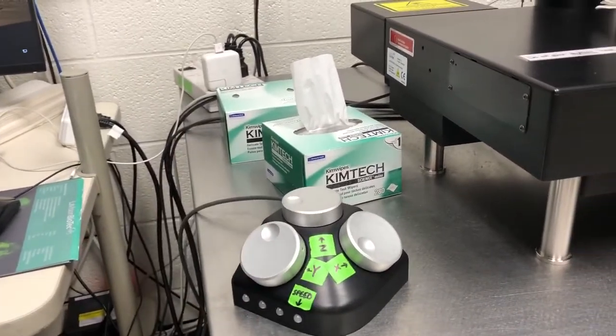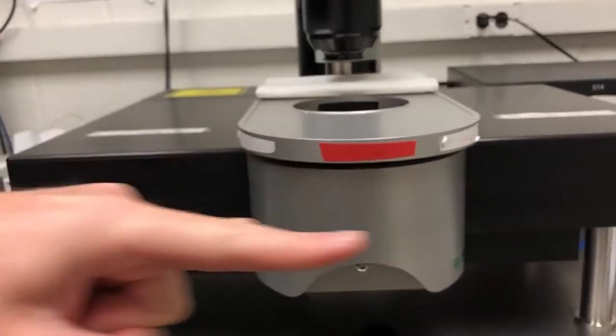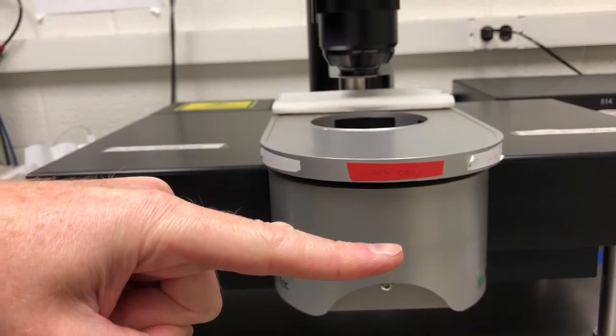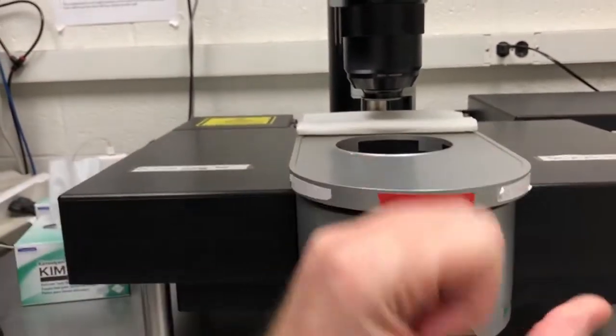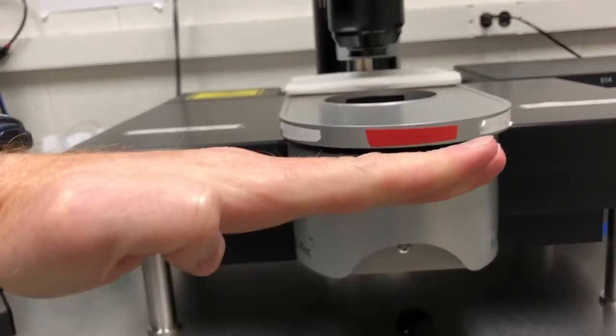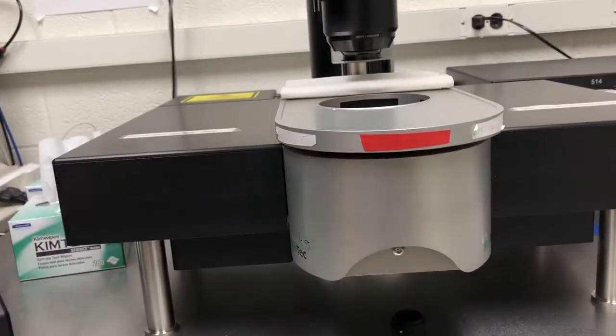We have a joystick that allows us to move the sample up or down. That is the way that we look at different planes, because if you recall, the light sheet will be roughly at this height in the microscope. The way we look at different parts of the sample is not by moving the light sheet, but by moving the sample itself. We can move it up or down while the light sheet remains in the same place, and that's how we get a Z-stack.